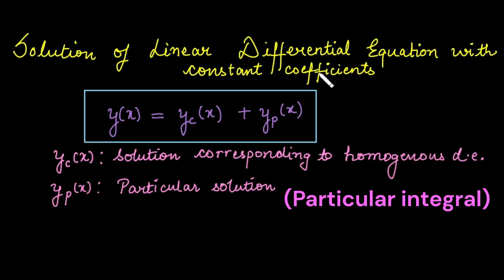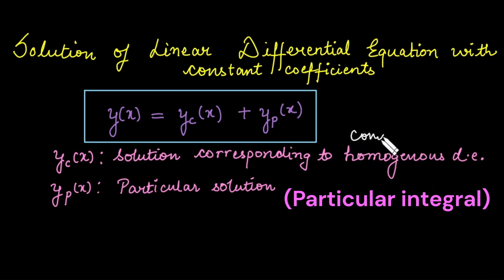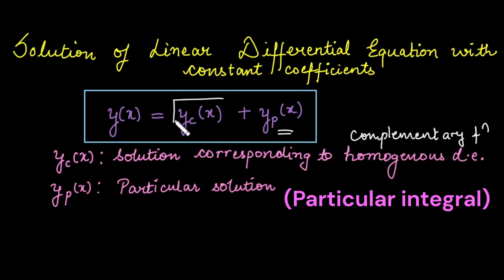Solution of linear differential equations with constant coefficients. In general, the solution is written as a function of x represented by two types: the first type corresponds to the homogeneous differential equation and is called the complementary function, whereas the second term is called the particular solution corresponding to the non-homogeneous part. In this video, we are going to learn how to find the complementary function.